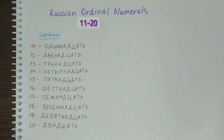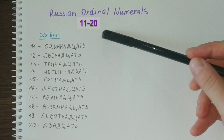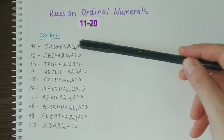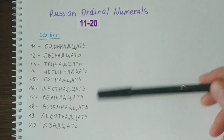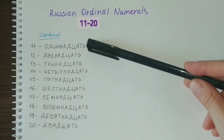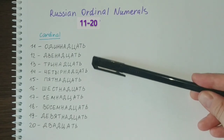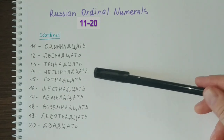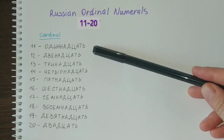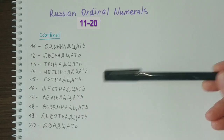What we also have to learn about the ordinal numerals from 11 till 20 is that they are formed from these cardinal forms. In all of these cases, we have to drop the last letter, which is the soft sign, and we have to add an ending. And that is how we form the Russian ordinal numerals from 11 to 20 — by adding the ending.